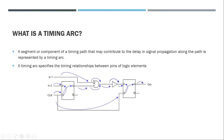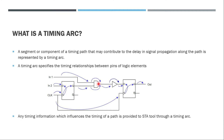A single cell with multiple inputs will have multiple timing arcs because each represents a possible propagation path of the signal. Each of these paths may have a different delay associated with it. Any timing information which influences the timing path is provided to STA through timing arcs, and this information is essential for STA to calculate the delay along the path.